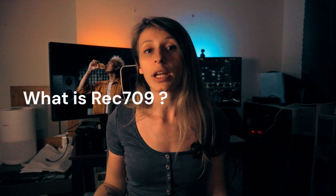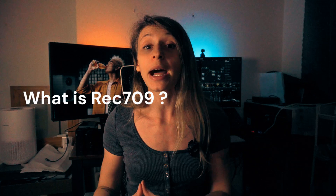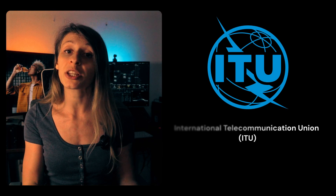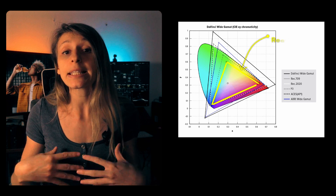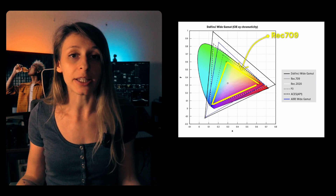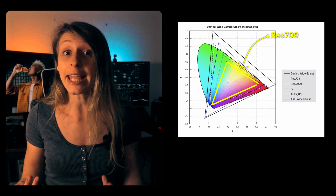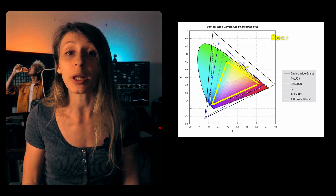So let's go to the basics. Rec.709 is the standard developed by the International Telecommunication Union for image encoding. It is a common language used by the majority of displays, and it is the process of interpretation of an image from the camera to a display. Rec.709 is smaller than most color spaces, making sure that any image shot by any camera can be viewed on displays.